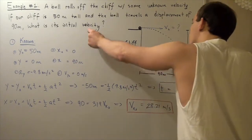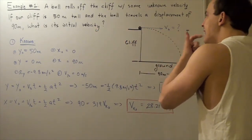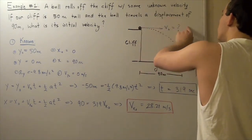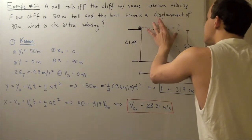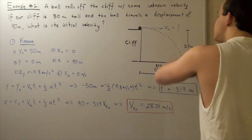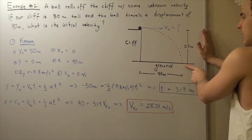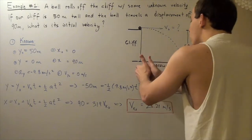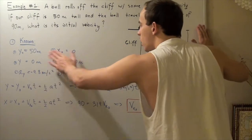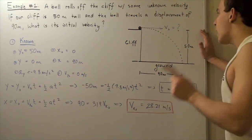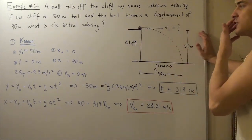In other words, our ball is rolling on the cliff on a straight path, and the ball rolls off the cliff with an unknown initial velocity along the x-axis. That initial velocity propels it 90 meters from the cliff to the point where the ball hits the ground. So we know our x-displacement, we know our y-displacement, and we know a few other things. How would we find our v-initial, our initial velocity along the x-direction?